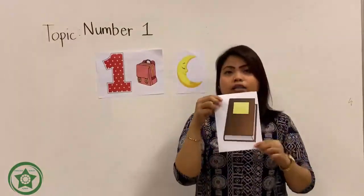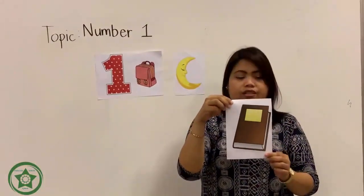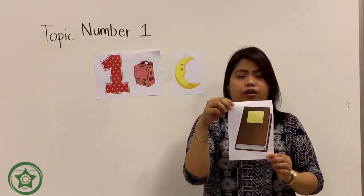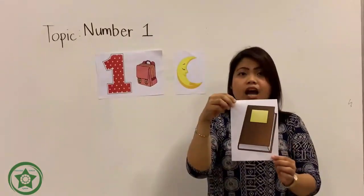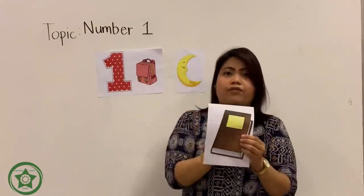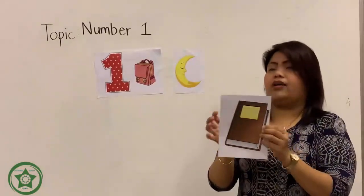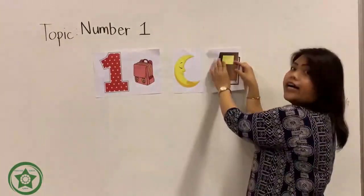I have also here another object. What object is this? Very good. This is a book. And how many book it is? One. Very good. Everybody say one book. Again, one book.